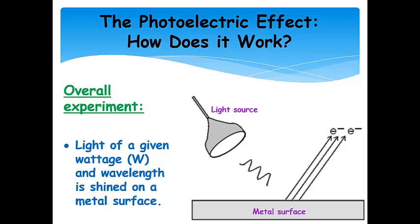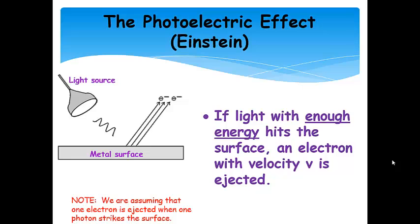So how does the photoelectric effect work? The overall experiment involves light of some wattage and wavelength - and remember, wavelength is related to the energy of the light - shined on a metal surface. Now, one thing I haven't shown is that I'm showing this as kind of a light bulb as a cartoon, but really, it would be a laser of a certain wavelength or range of wavelengths that hit this metal surface. And then all of this area would be enclosed in an evacuated tube. Now, if the light coming from this light source has enough energy, then it will eject an electron. And the electron will travel from the surface with some velocity.